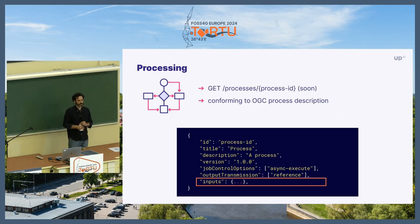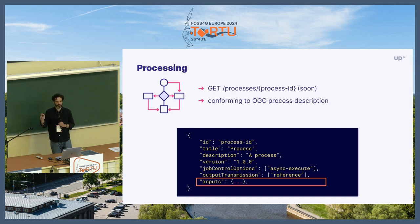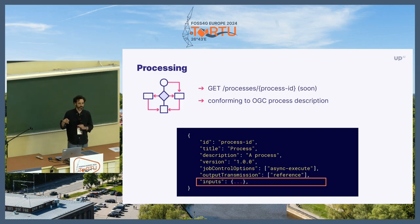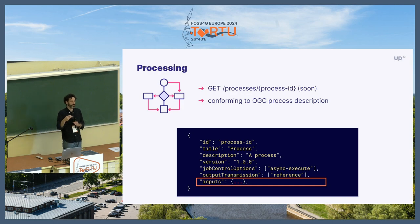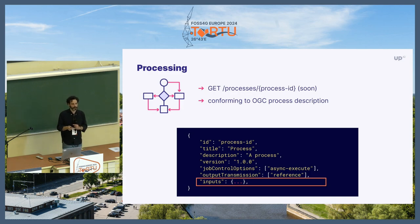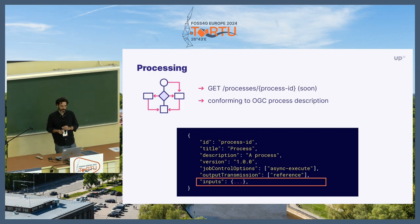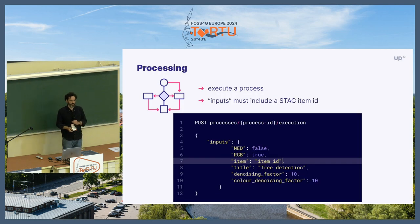As for processing, we don't have a list processes endpoint yet. Process descriptions are right now conformed to OGC Processes API specification, but they are internal in our server because we have a limited list of processes. This is coming in the next few weeks — we will have a public API with a GET processes/{processId} endpoint. What I want to focus on today is more on the inputs part of the process description.